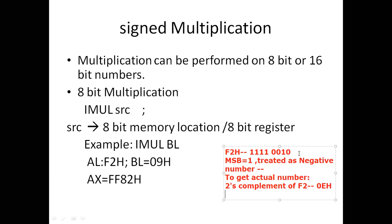So F2h is a two's complement number representing a negative value. Its two's complement is 0Eh, meaning F2h = -0Eh. We multiply -0Eh by 09h, and the result after multiplication is -7Eh.